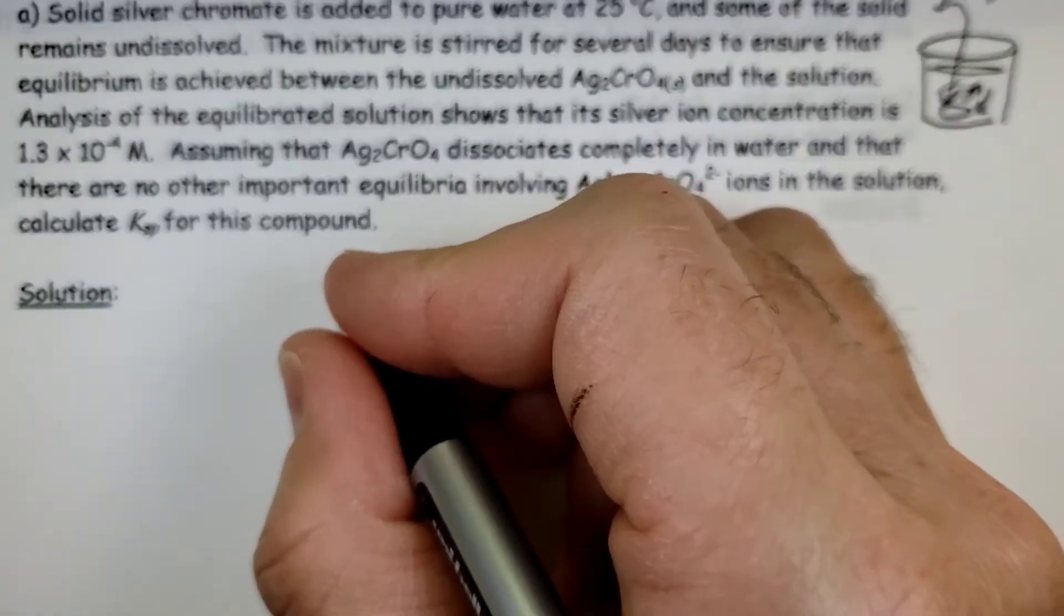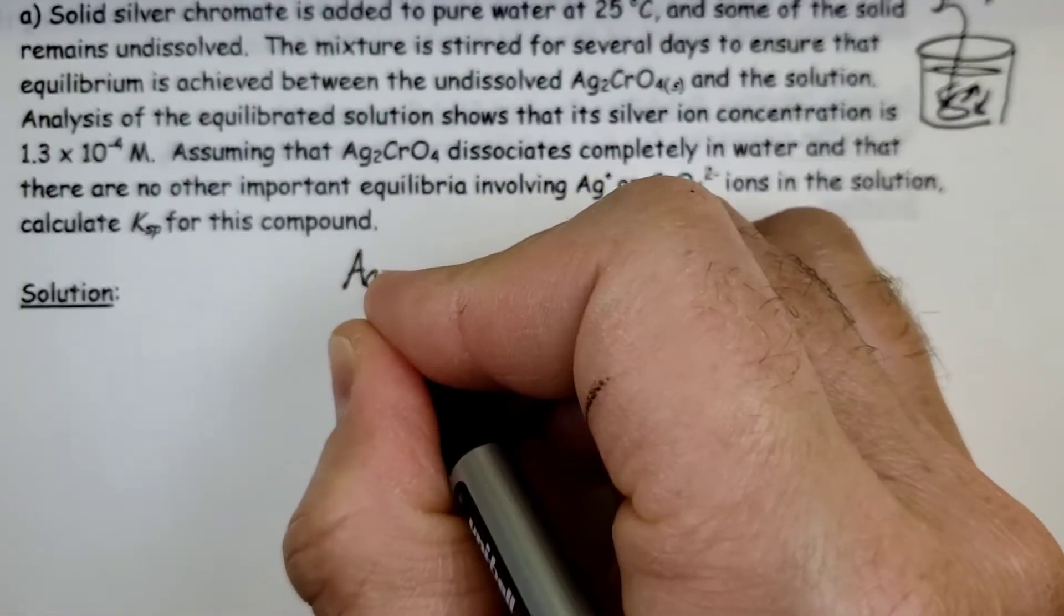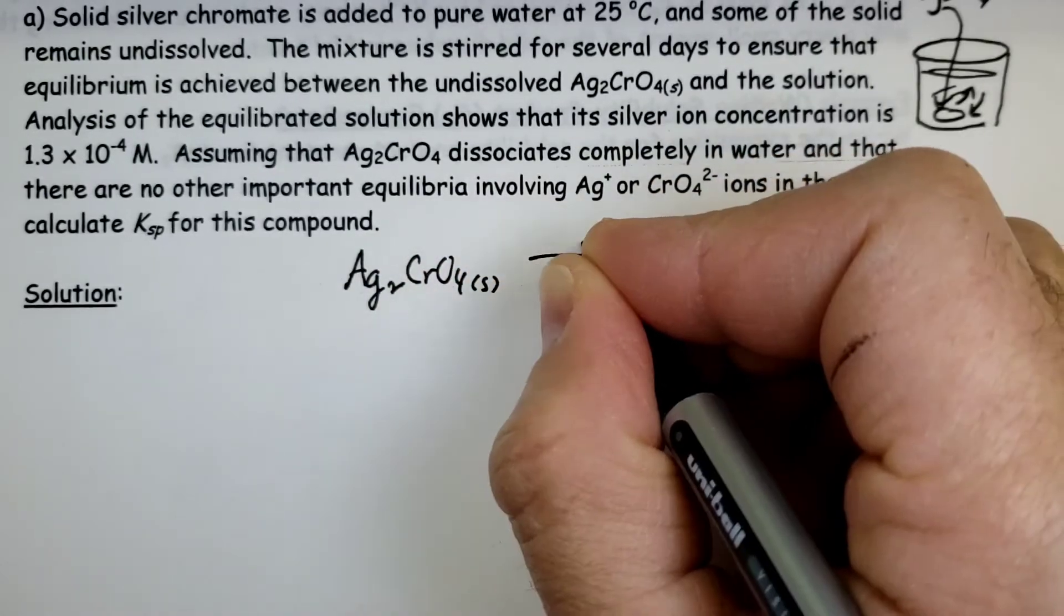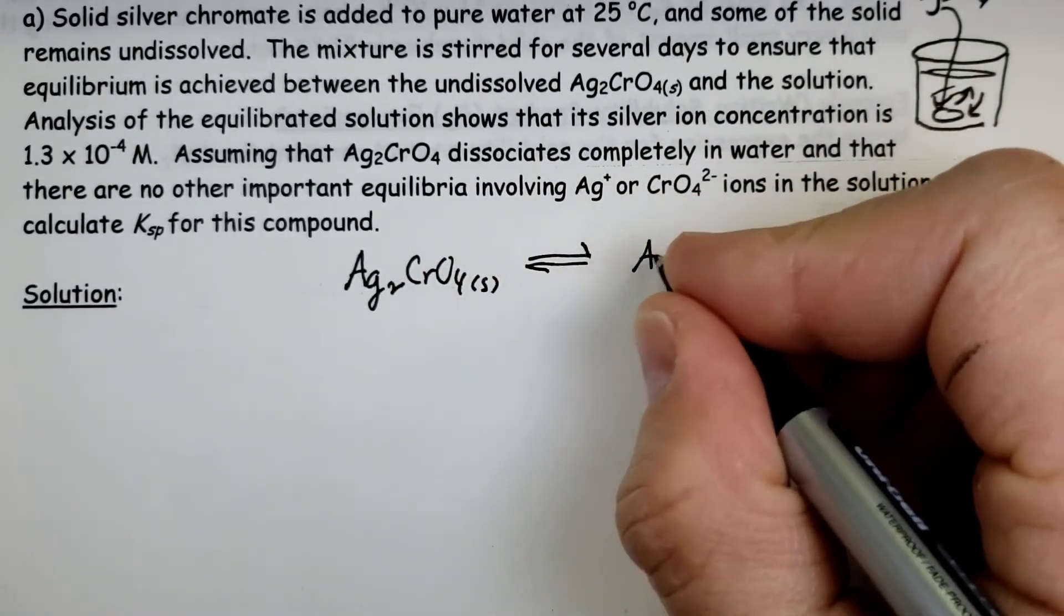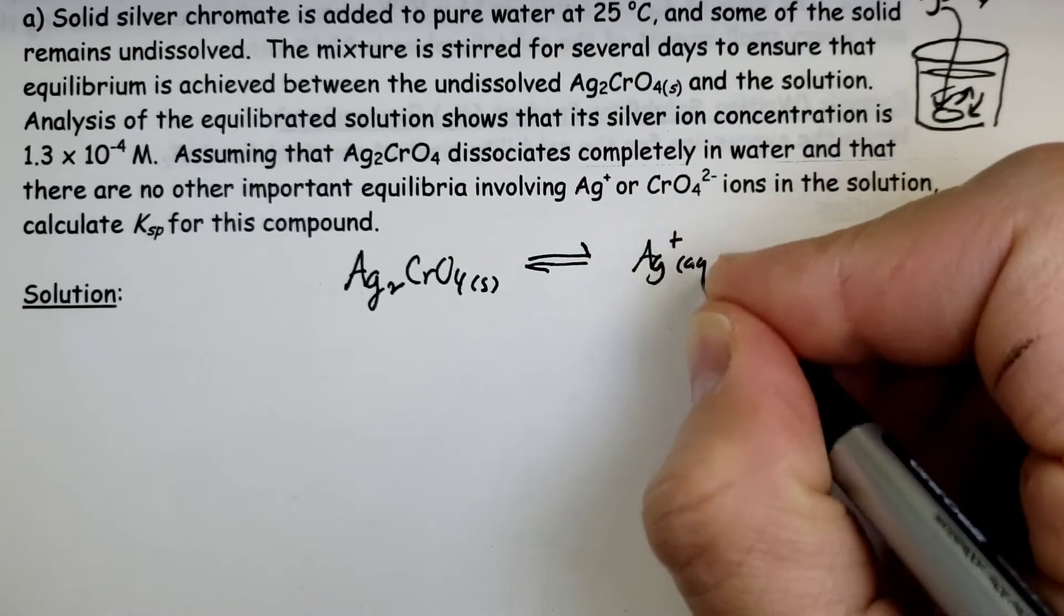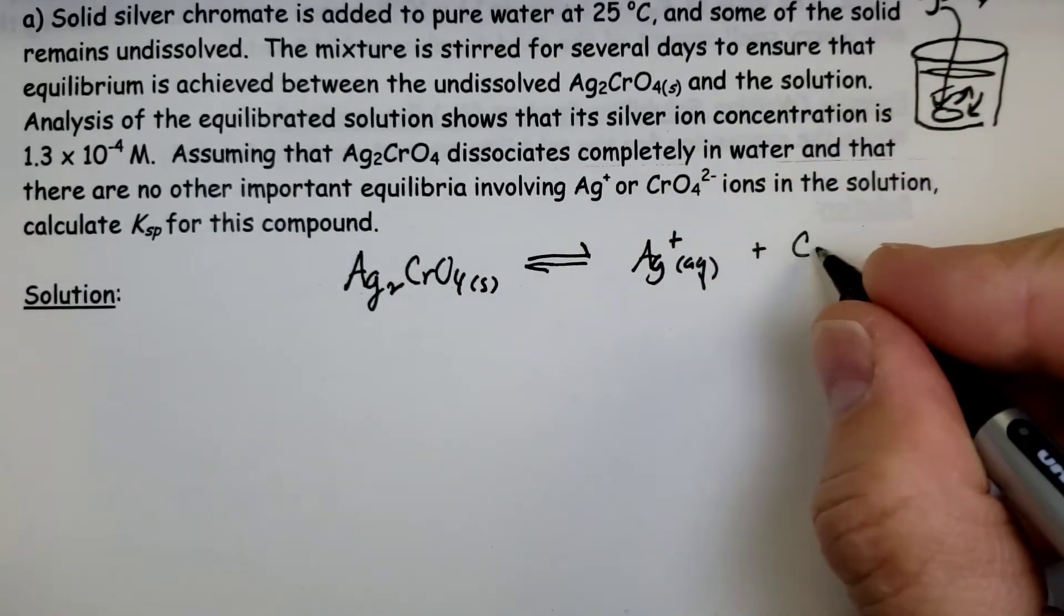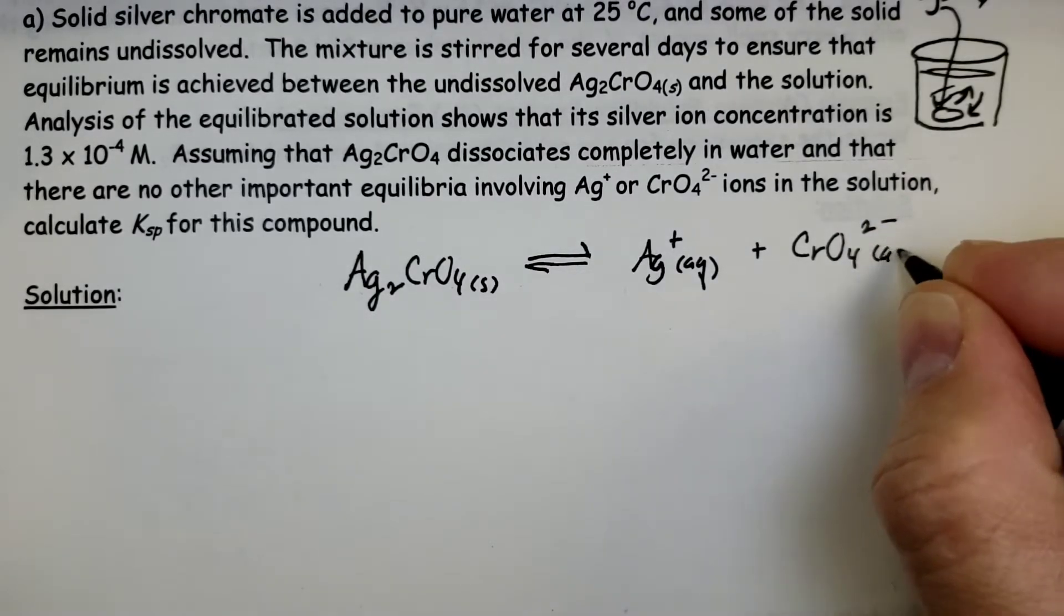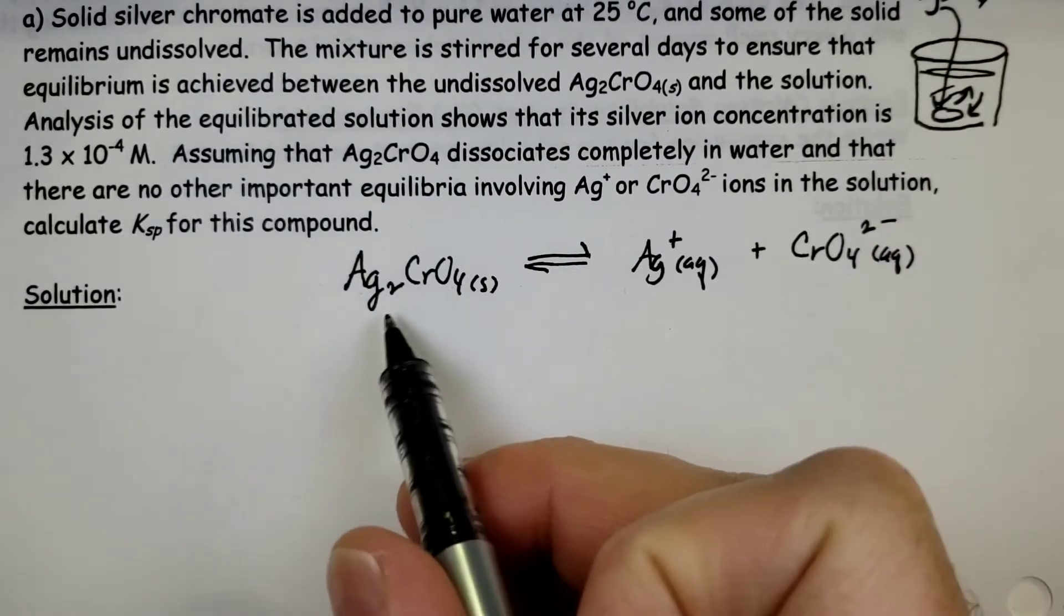What we have to do first is write the equilibrium equation. It breaks down - we'll have silver floating around and chromate ions. Look at your pink periodic table, you'll see that it has a negative 2.